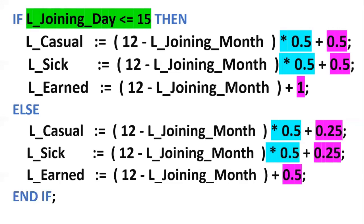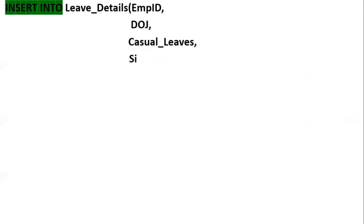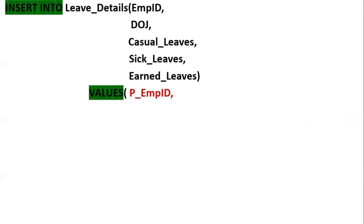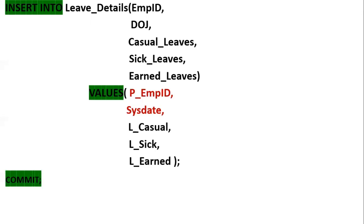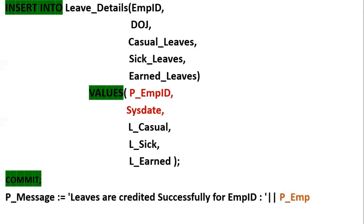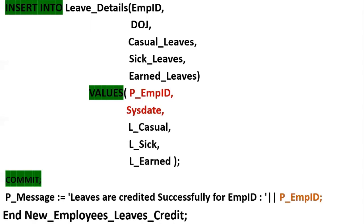Once we get the calculated data, we insert into the leave_details table: employee_ID, date_of_joining, casual_leave, sick_leave, and earned_leaves. P_employee_ID is the parameter passed from the user. To commit this transaction we use COMMIT, the TCL statement. Once everything is done, we print to the user: 'Leave credited successfully for employee ID' followed by P_employee_ID. This is the end of the procedure.